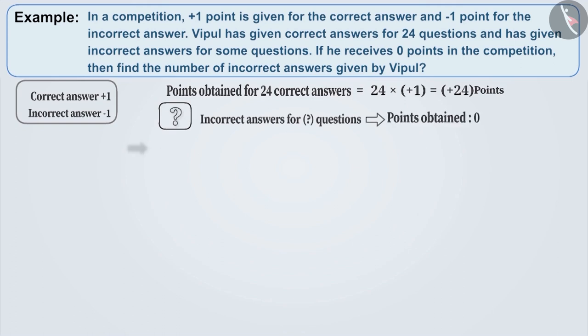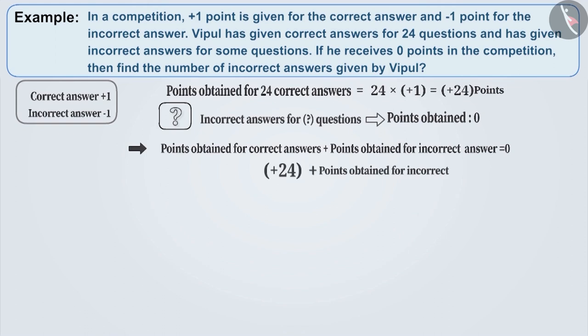We can say that points for correct answers plus points for incorrect answers is equal to 0. That means plus 24 plus points for incorrect answers is equal to 0. So, tell me, what will be the points for incorrect answers? Think for a while.